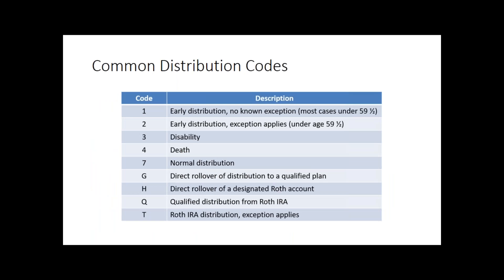A couple of codes we'll typically see in VITA: Code 1 is an early distribution — we don't want to see this, but unfortunately we do see it a little more often. The taxpayer is typically under 59½. When you take money out of your retirement plan early, the government will not only tax it for income tax purposes, but it's also subject to an additional 10% penalty. Whenever you see a code 1 on a 1099-R, generally the taxpayer will have a much different result from the prior year. So if they're a returning client, get them ready — the result's going to be different. If you have a box of tissues, get those handy.